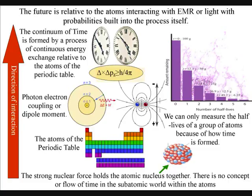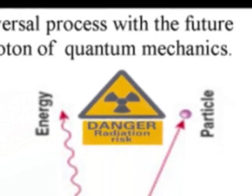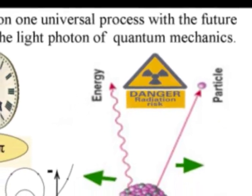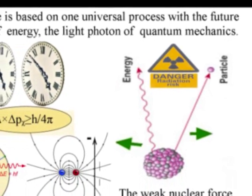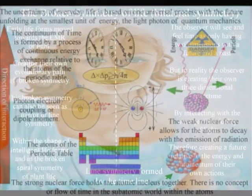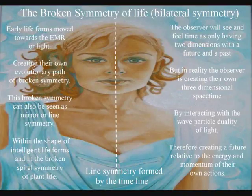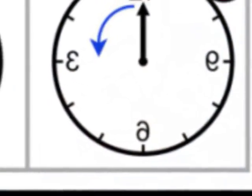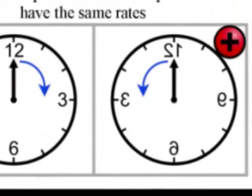Therefore, we can't predict the decay of an individual atom and can only measure the half-life of a group of atoms. It is interesting that when we have an atom with an unstable atomic nucleus emitting radiation, there is the potential that the future will be relative to that radioactivity — this might be in the form of a potential cancer risk. This represents the delicate symmetry of space and time that life is based upon being broken by the radiation, supported by the weak nuclear force being the only known interaction that does not conserve parity and violates CP symmetry.